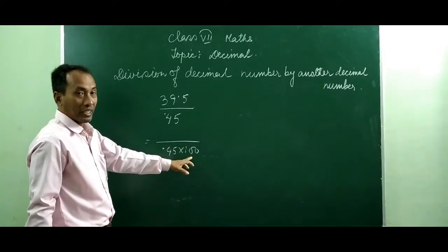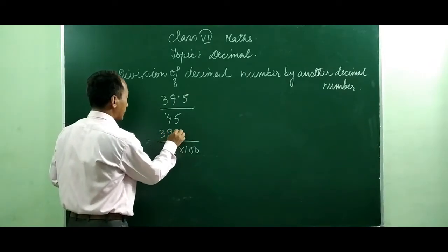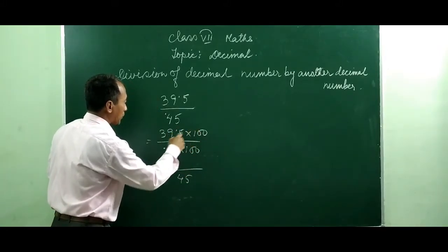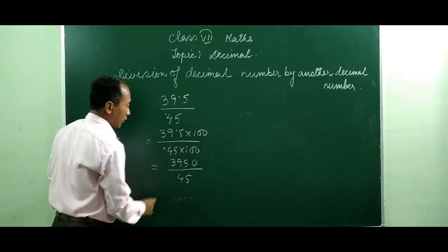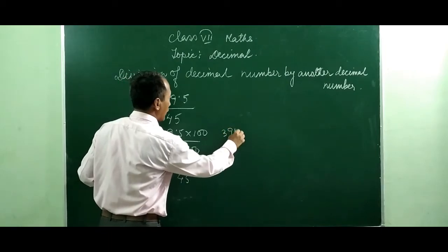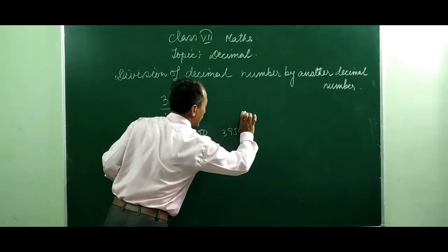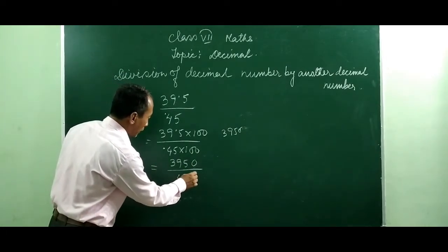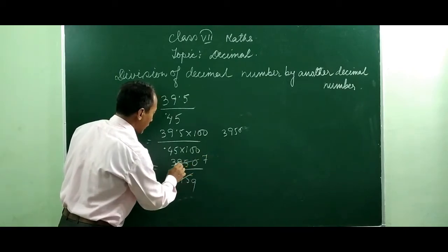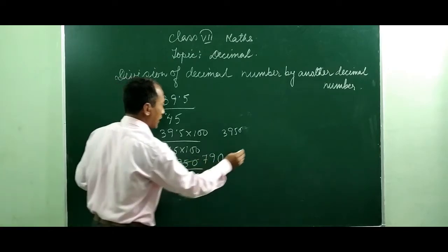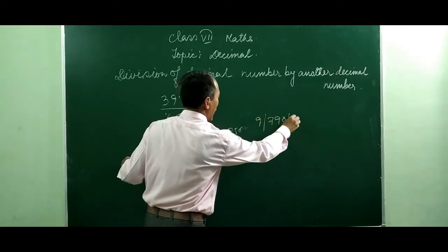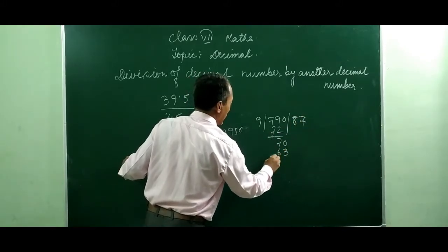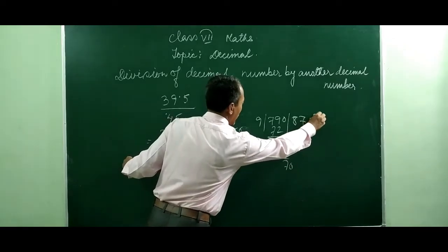Since we are multiplying by 100, the numerator also should be multiplied by 100. So the denominator becomes 45 with the decimal removed. When we multiply 39.5 by 100 it becomes 3950. So we are considering 3950. Now you cancel with 5, divide, and working through the division of 3950 by 45, the result comes to approximately 87.7, or you can take it as 87.8 also.